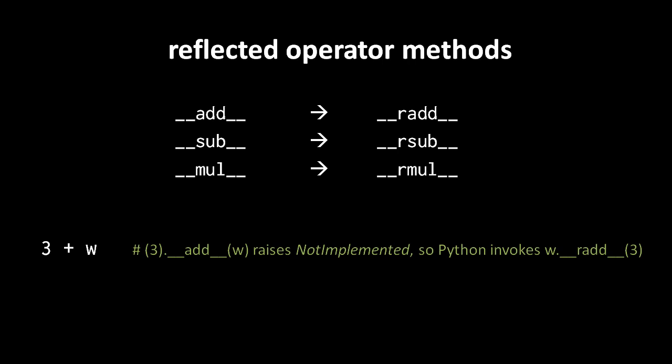So it will raise the not implemented exception and that triggers Python to then invoke the r add method, the reflected add method of the w object with 3 passed as argument. So assuming in this class you have defined an r add method, you can then have a defined behavior for what happens when the plus operator is used with instances of this class as the right operand.